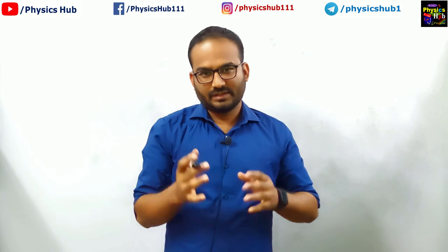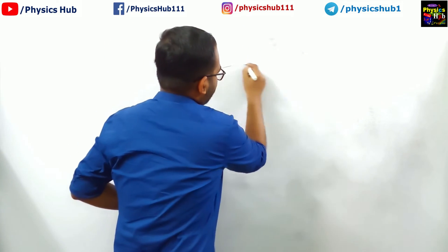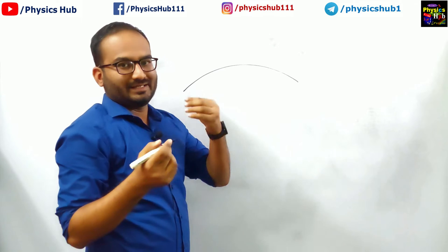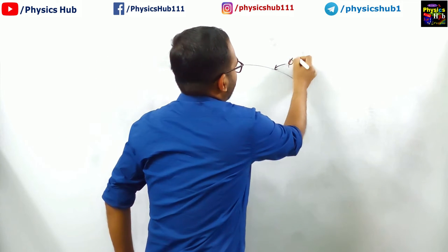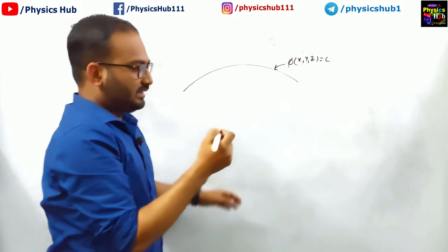Today in this video we are going to discuss the tangent plane normal to the level surface. Let us take a level surface like this. This is basically a scalar function phi of x, y, z equals c. Let us say this is the surface.